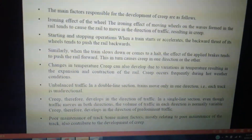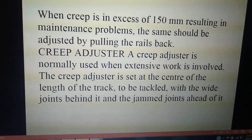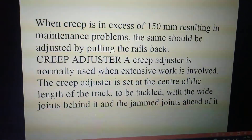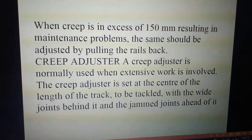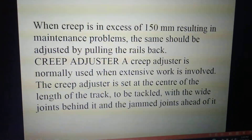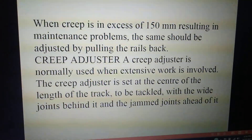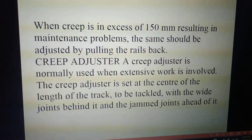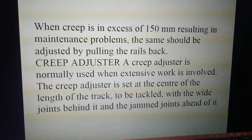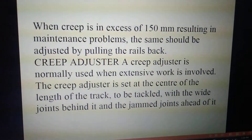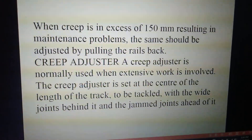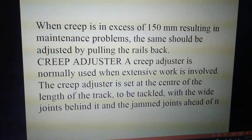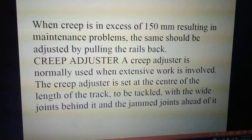Poor maintenance of the track can also lead to creep. When creep exceeds 150 mm, it results in a maintenance problem, and it can be adjusted by pulling the rails back using a creep adjuster. A creep adjuster is normally used when extensive work is involved. It is set at the center of the length of track to be tackled, with wide joints behind and jams ahead of it.